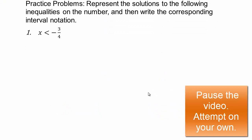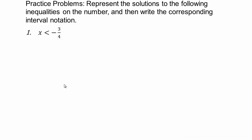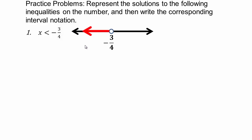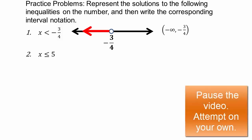Now let's look at some examples. Given an algebraic inequality, draw a number line and write the interval notation. Pause the video here and try. For x less than negative three-quarters: there's a hole at negative three-quarters because it's not included, x is smaller so you shade to the left. The interval notation is negative infinity to negative three-quarters with a round bracket, since negative three-quarters is not included.